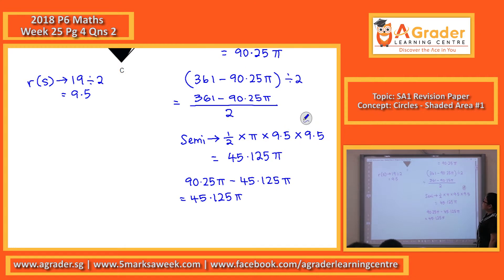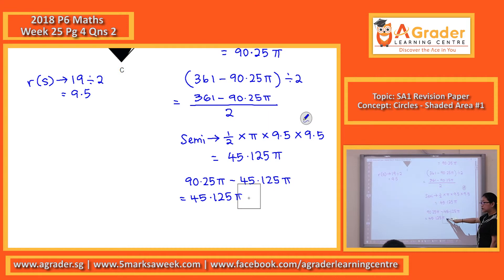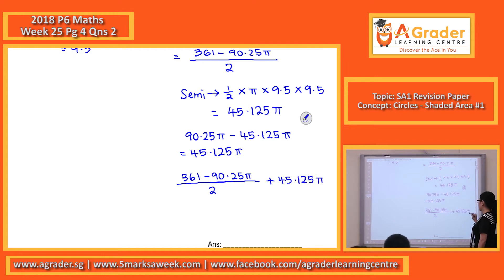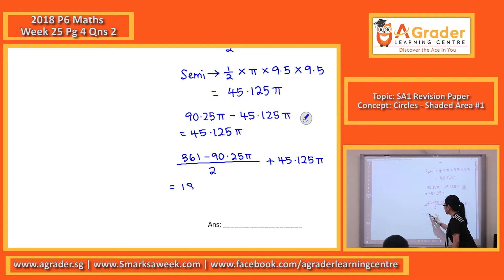So take note, one of the shaded part is this, the other of the shaded part is this. Now you just need to add the two of them together. So 361 minus 90.25π, out of 2, the whole thing out of 2, plus 45.125π. So if you key this whole thing into the calculator, you will just get this: 180.5.